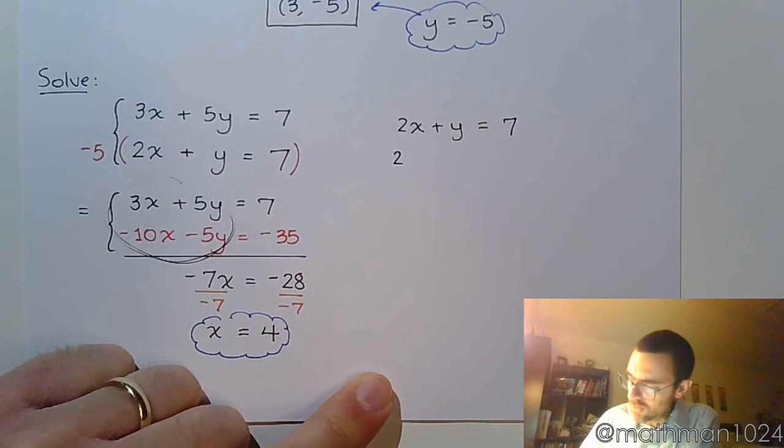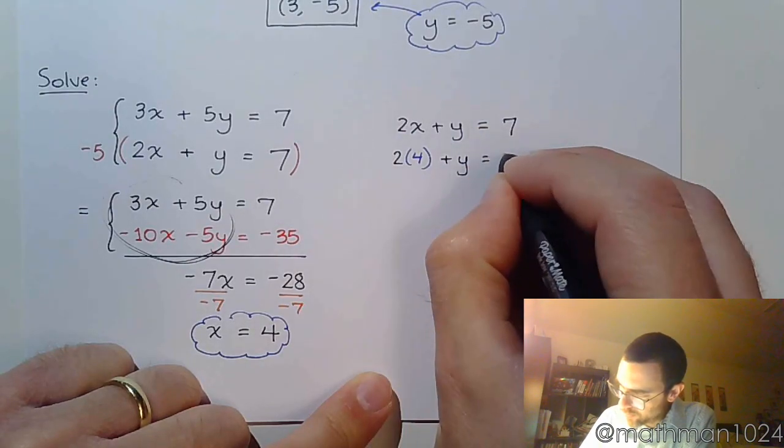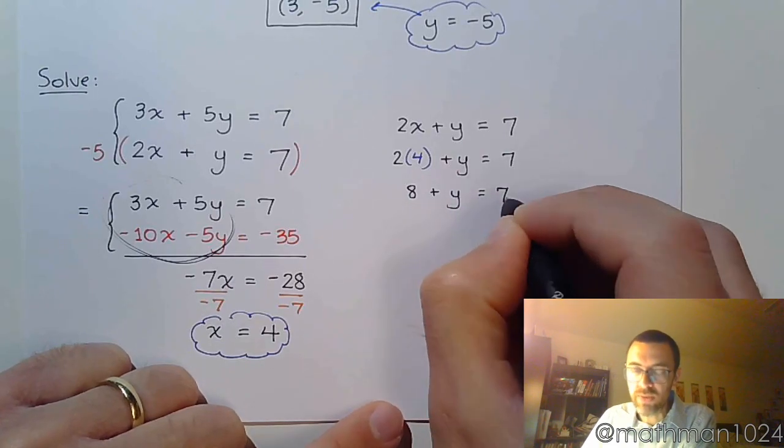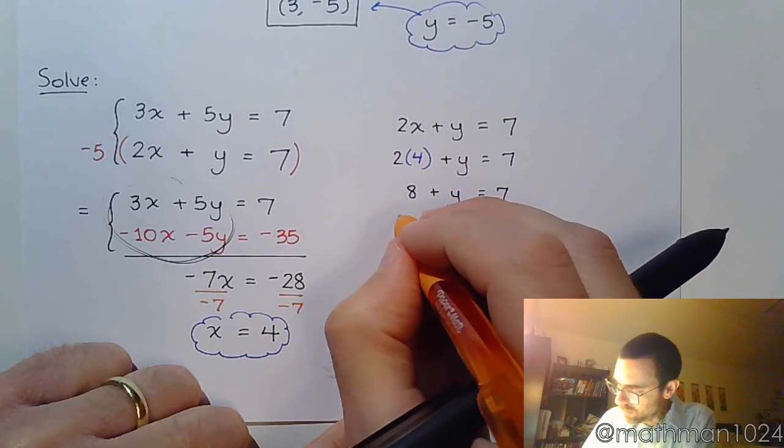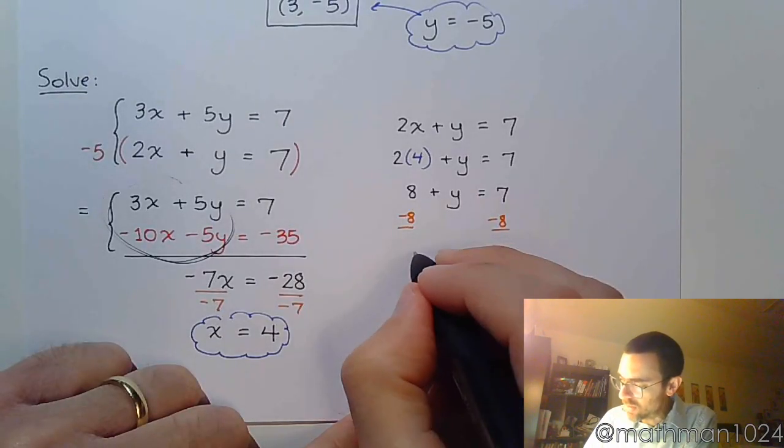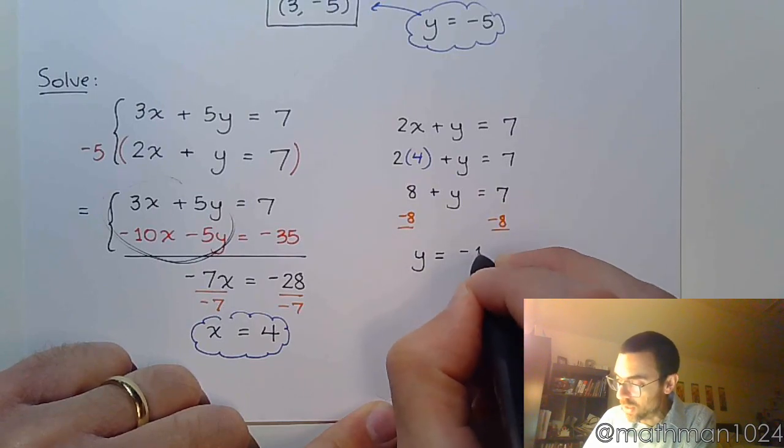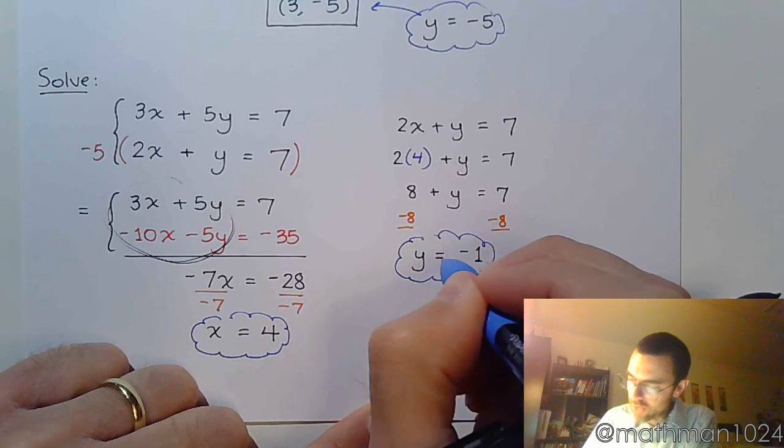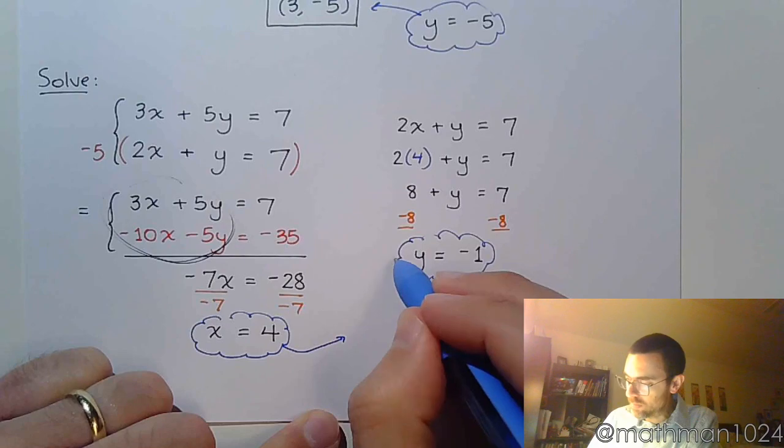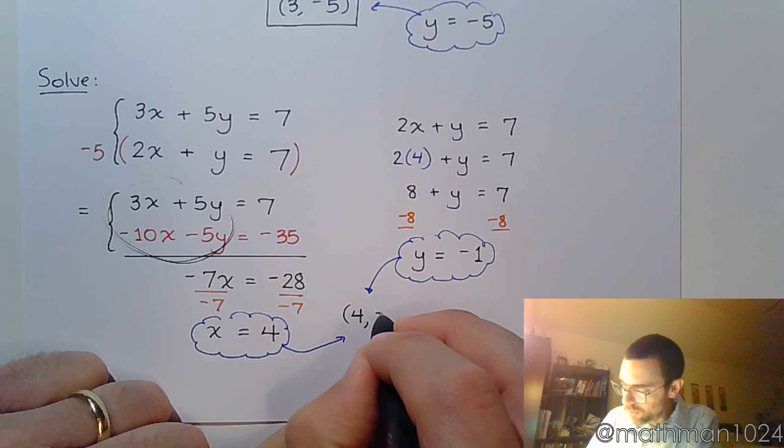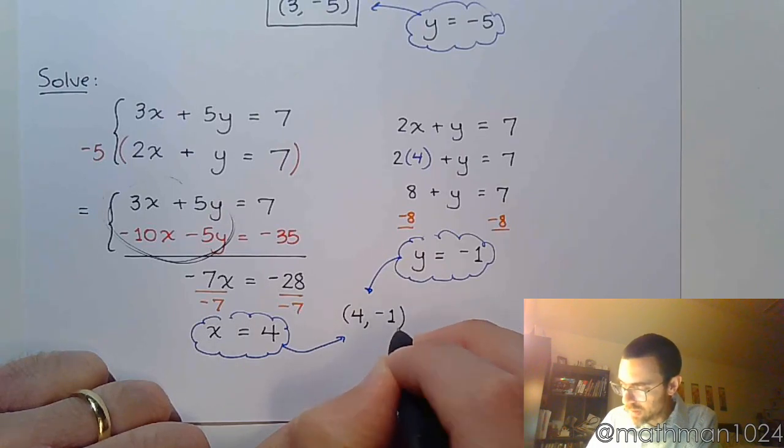As long as you do everything right, pay attention to your signs, you're going to be fine. So replacing the x with 4, I get 8 plus y equals 7. Subtract 8 on both sides, and y is equal to negative 1. So there is the other half of our solution. And combined, we get the ordered pair 4, negative 1.